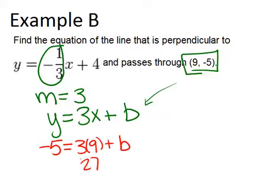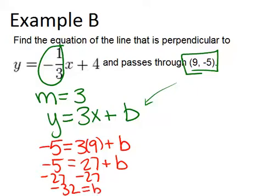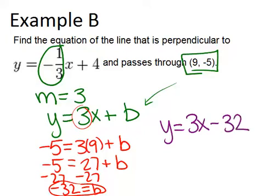Three times nine is twenty-seven. So as I go through, I'm just trying to solve for B. I'll minus twenty-seven from both sides, and I get negative thirty-two equals B. So now I actually know my equation because I know the y-intercept I'm looking for and the slope is three. So my final answer will be y equals three x minus thirty-two.